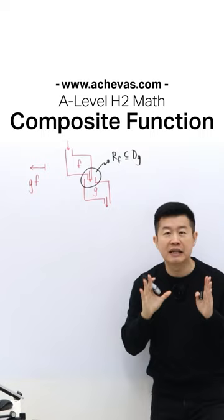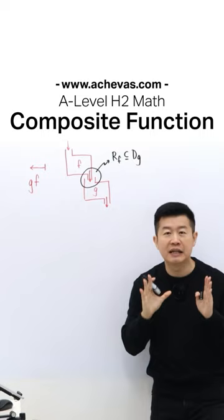And I want to make sure that this is very, very clear. It is logical - it's not because I've memorized something, but it is logical that in order for the composite function GF to exist, the range of F has to be a subset of the domain of G.